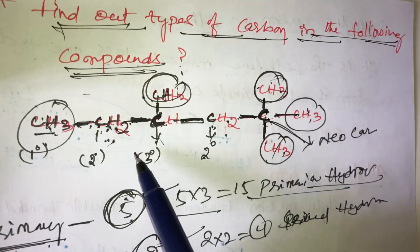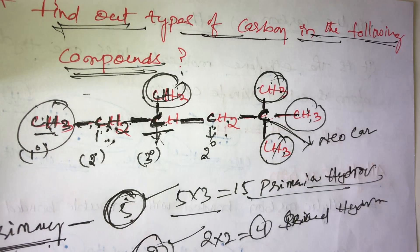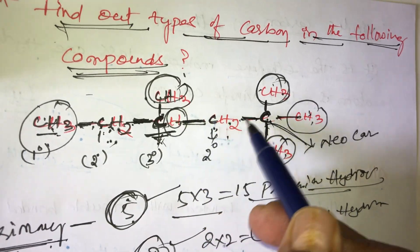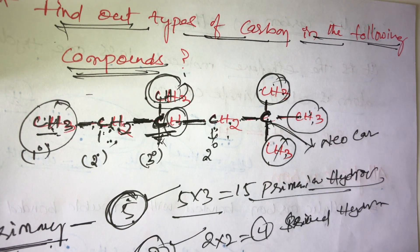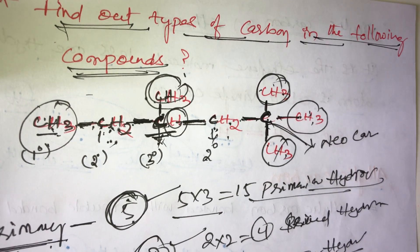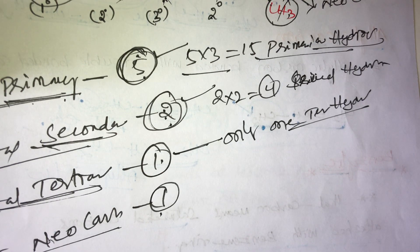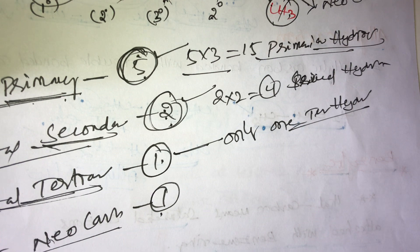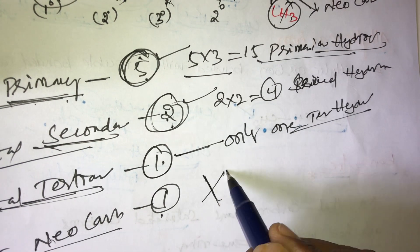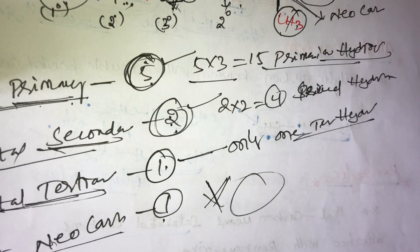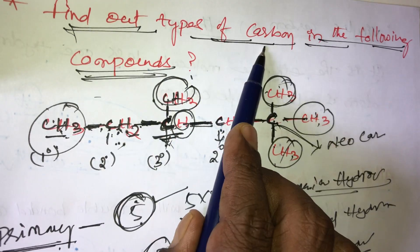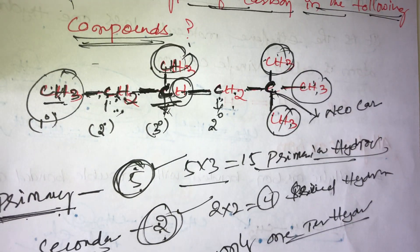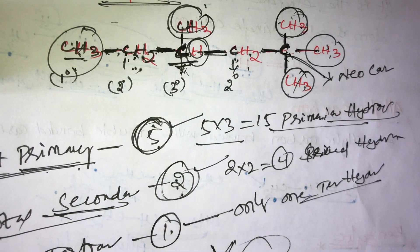For tertiary hydrogens: there is only 1 tertiary carbon in this compound, and a tertiary carbon has only 1 hydrogen — so total tertiary hydrogens = 1. For neo hydrogen: neo carbons do not contain any hydrogen, so neo hydrogen is not possible — zero. This is how to find types of carbons and types of hydrogens.